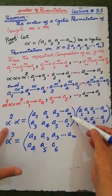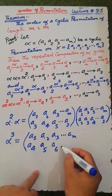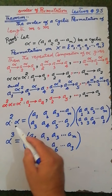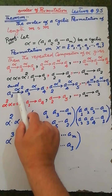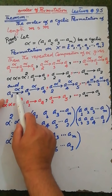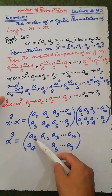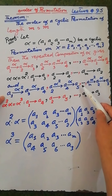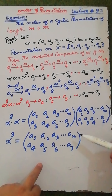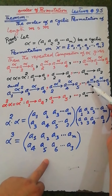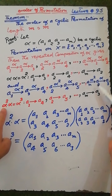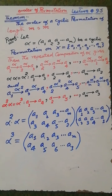Under alpha squared, am maps to a2, and under alpha, a2 maps to a3. Therefore alpha cubed maps am to a3. The composition of alpha squared with alpha is denoted alpha cubed, giving: a1 maps to a4, a2 maps to a5, a3 maps to a6, and am maps to a3.